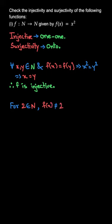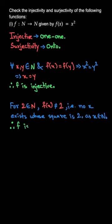So f(x) ≠ 2, that is, no x exists whose square is 2, as x belongs to N. Therefore, f is not surjective.